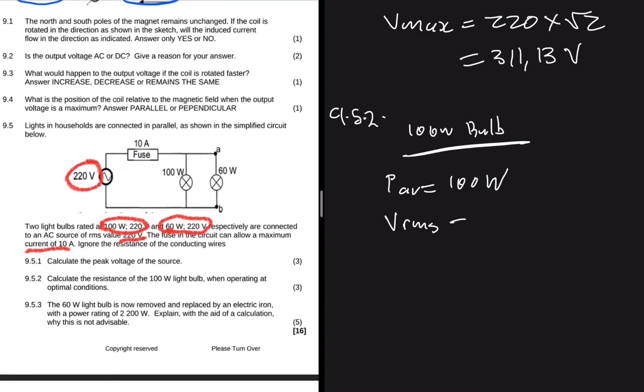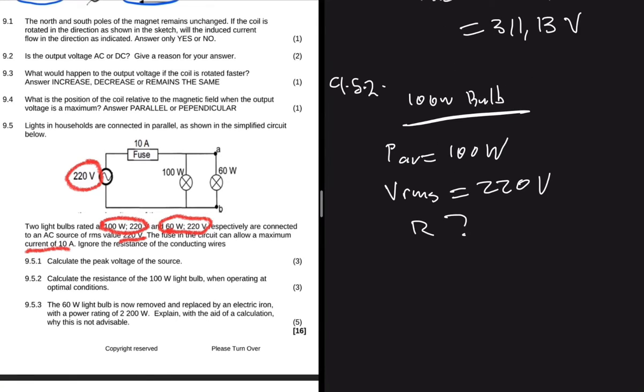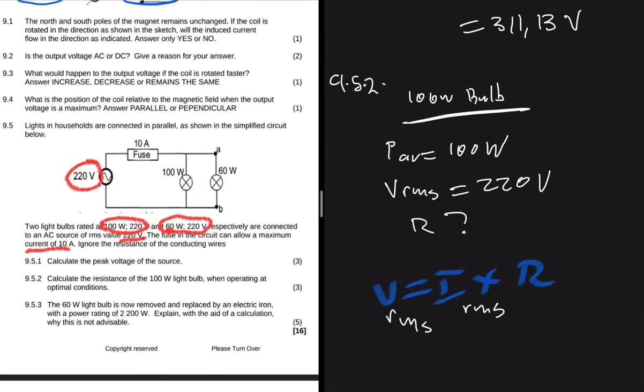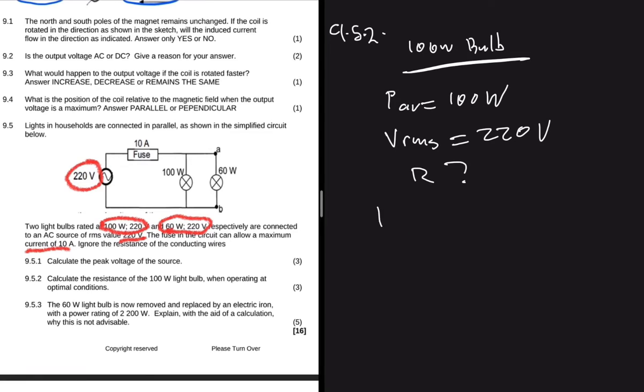So here we're going to have V_rms being equal to 220 volts. And now what are we looking for? We're looking for the resistance. So what is the resistance? When you're working with electrodynamics instead of having, let's say, V equals I multiplied by R, you instead have V_rms and I_rms, and you're going to use V_rms and I_rms when you calculate power too.